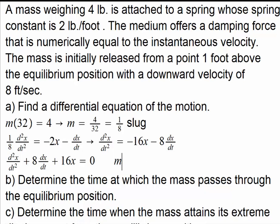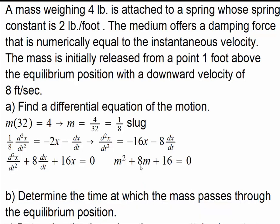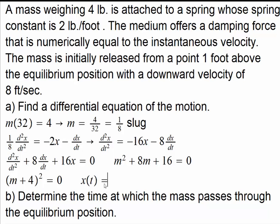The auxiliary equation, assuming e^(mt) is a solution, gives us (m + 4)² = 0. This gives us a repeated root m = -4. So x(t) is going to be c₁·e^(-4t), and for the other linearly independent solution we introduce a factor of t, giving c₂·t·e^(-4t). So that is the equation of the motion.